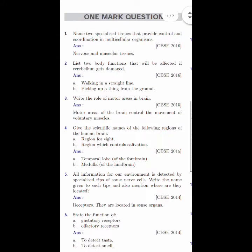Here are the one mark questions. Name two specialized tissues that provide control and coordination in multicellular organisms. Which are those specialized tissues that provide control and coordination in case of us? That is nervous and muscular tissues.